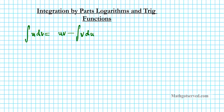Where did this formula come from? I'm going to do a quick derivation of this formula, and then we'll go ahead and start making use of it. This formula basically came from the product rule.